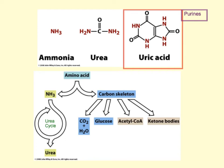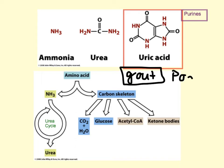Nucleotides are the very last reservoir of nitrogen. For example, the degradation of purines forms uric acid, which can be excreted by the kidneys. An excess of uric acid — if you get too high a concentration in your serum — can actually crystallize in the joints and form gout. One of the main areas where gout forms is in the big toe, which is called podagra.